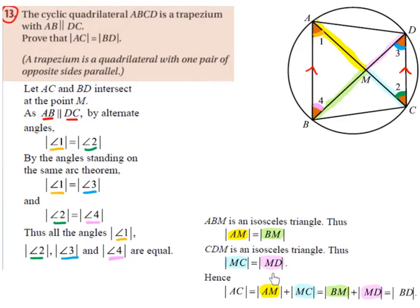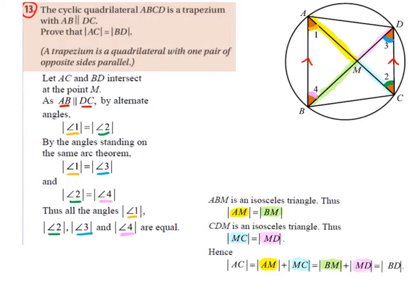Hence, AC equals AM plus MC, which equals BM plus MD, which equals BD. The line AC is made up of AM plus MC. We know AM equals BM and MC equals MD, so BM plus MD together makes the line BD. Therefore, AC is equal to BD, which is what we were asked to prove.